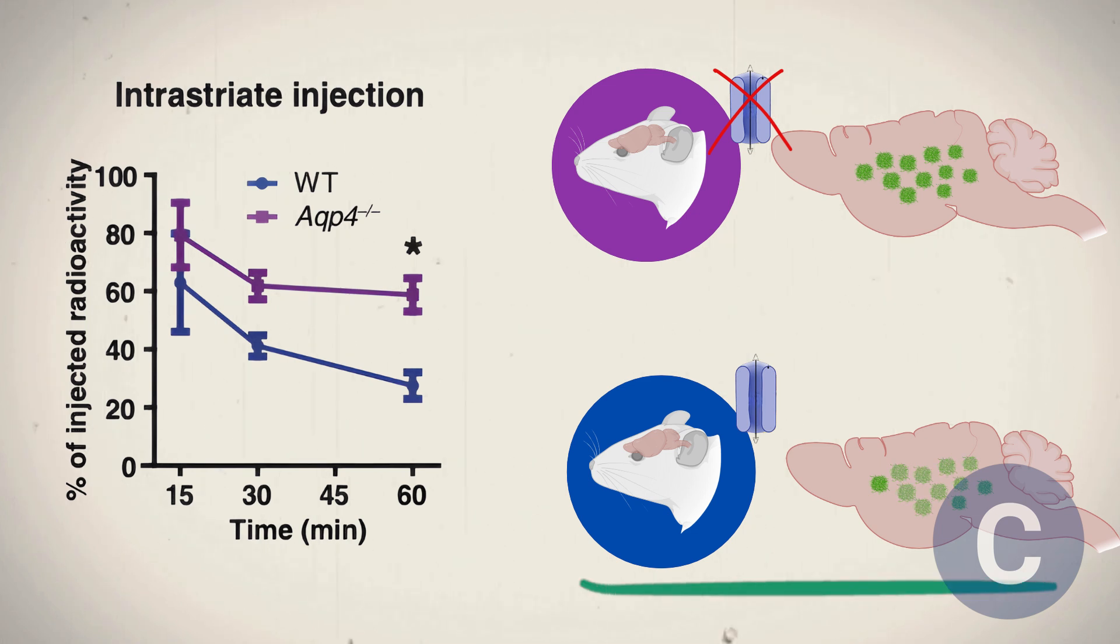In the AQP-4 null mice, without aquaporin-4, shown in purple, clearance was much lower, by about 55%. This suggests that aquaporin-4 helps with the removal of beta-amyloid from the brain.